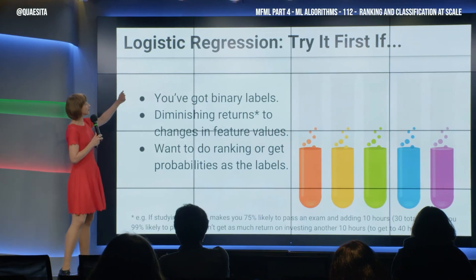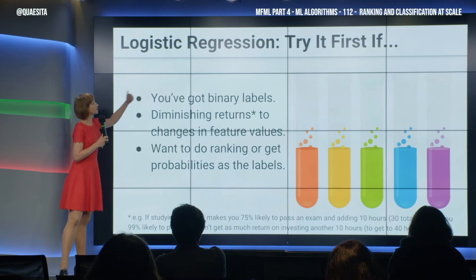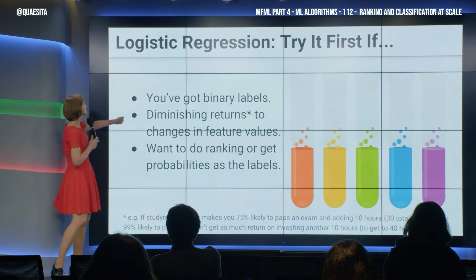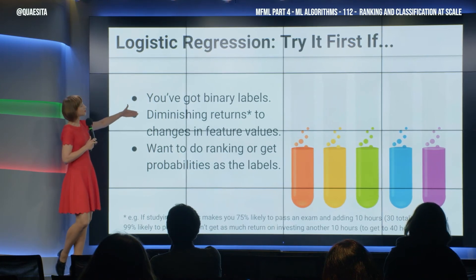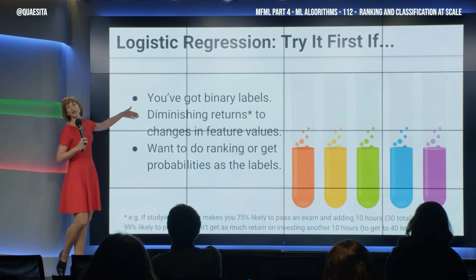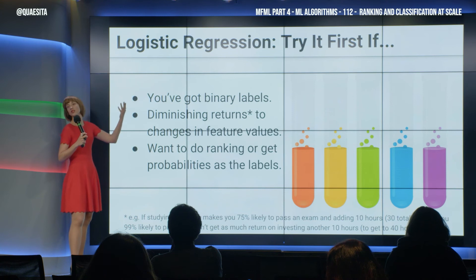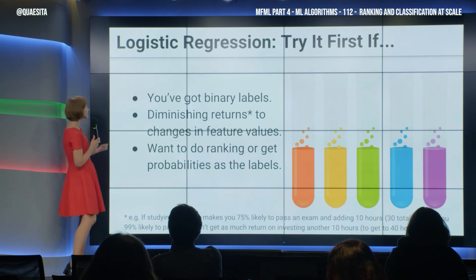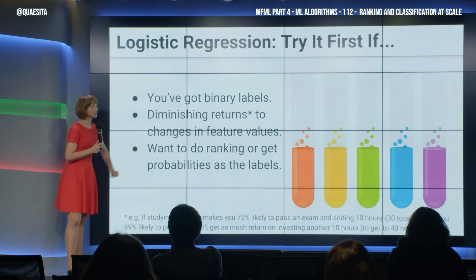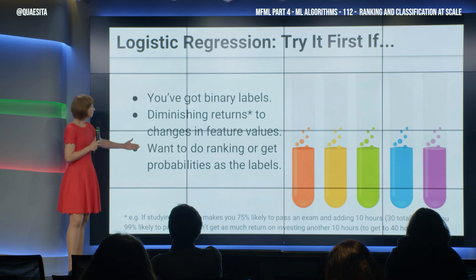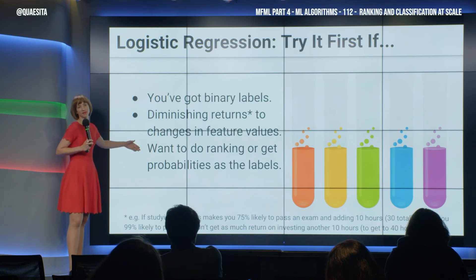The binary one works for binary labels, and you can also do multi-class. It's a good choice when you have a sense that diminishing marginal returns is part of what you're dealing with, and it gives you probabilities as output, which is very nice. Probabilities are pretty useful for ranking things.